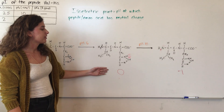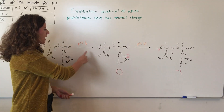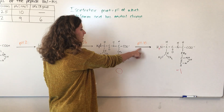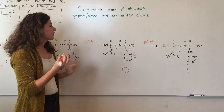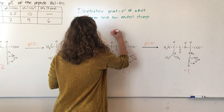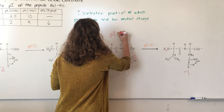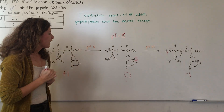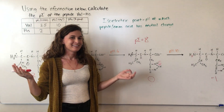To find the exact pH at which the charge is zero, you add up the two pKa's on either side of the neutral charge and divide by two to find the midpoint. So the PI of this peptide is (6 + 10) / 2 = 8. And that's how you calculate the isoelectric point.